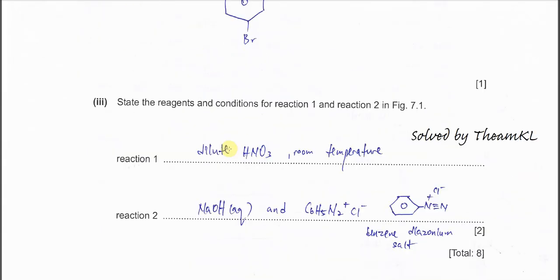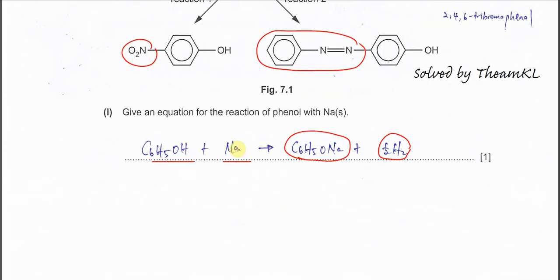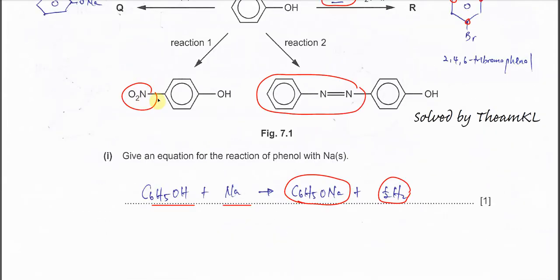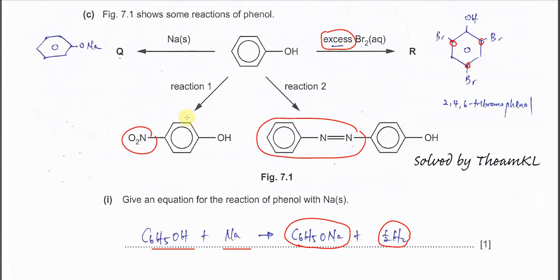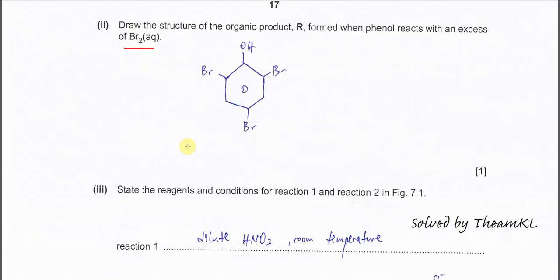Part three: State the reagent and conditions for reaction one and reaction two. Reaction one is to form the nitro group here, so we need to just add dilute HNO3 at room temperature.